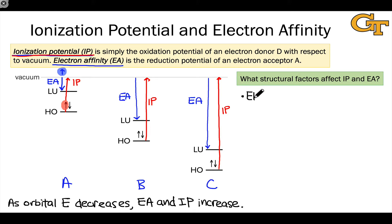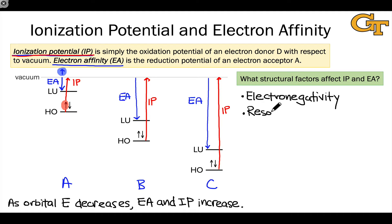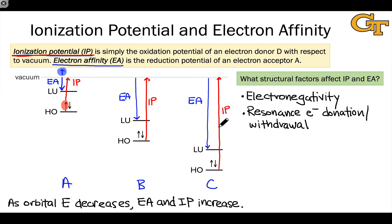The first and perhaps most important structural factor is the electronegativity of atoms involved in the molecule. The more electronegative the atoms are, the greater the ionization potential — since orbital energies are lower — and the greater the electron affinity. Groups that donate electrons via resonance tend to push up orbital energies and decrease electron affinity and ionization potential in magnitude, while withdrawing groups tend to increase both by lowering orbital energies. Additionally, the presence of non-bonding lone pairs tends to decrease ionization potential because those lone pairs are higher in energy than bonding electrons and easier to ionize.